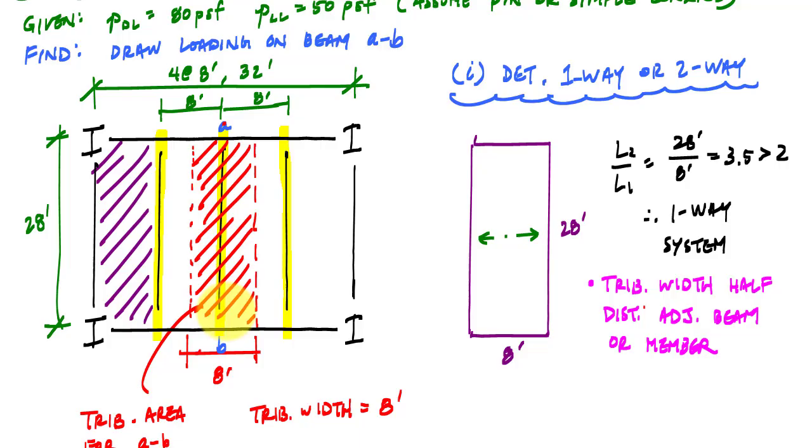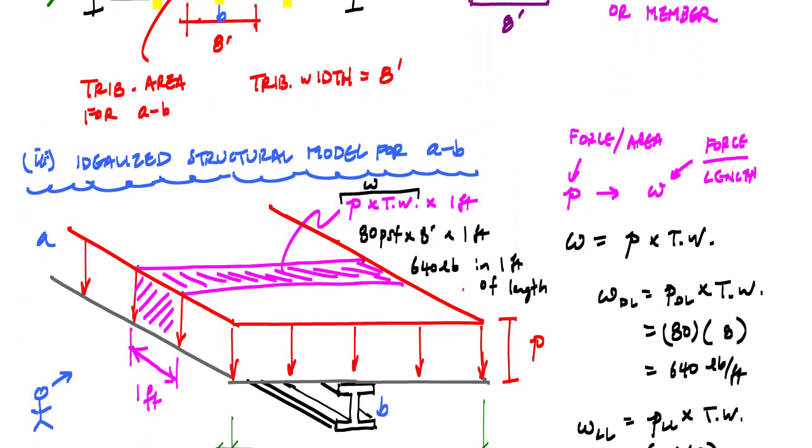And this would apply, this beam model would actually apply for all three of these highlighted beam segments here. And if this floor pattern we're continuing on both sides, it would probably apply for all of those beams, those floor beams that we see here. All right, so that's a one-way example. Let's try a two-way example.